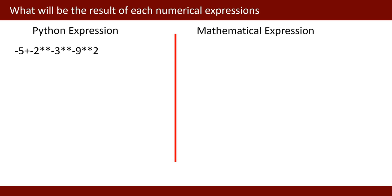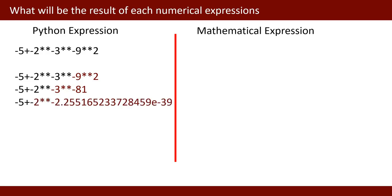Next: -5 + -2 ** (-3 ** (-9 ** 2)). First, solve -9 raised power 2, which gives -81. Then -3 raised power -81 gives approximately -2.25. Then raised to the power of 2 gives the intermediate value, leading to -5 + (-1), and -5 minus 1 gives 6.